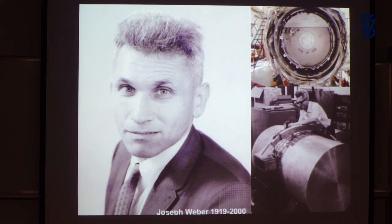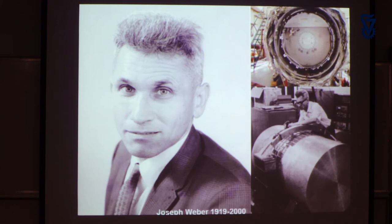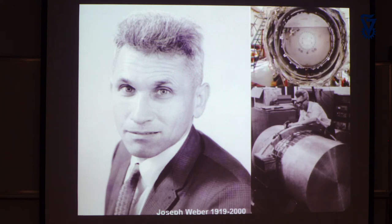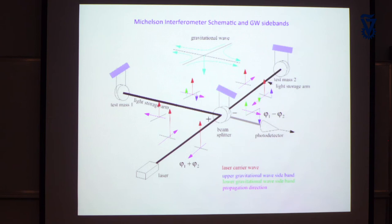What happened was very disappointing: no group saw the same thing that Weber saw. The strain he was sensitive to was around 10⁻¹⁴ — a Delta L/L of about 10⁻¹⁴ at one kilohertz. As we will find out, that was way, way too big. What he was seeing was something completely different — it could have been something magnetic, it was never settled.